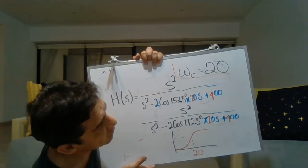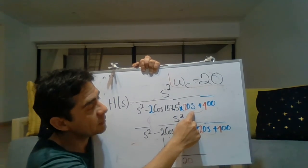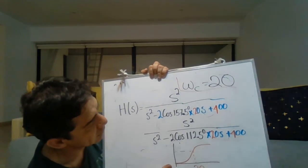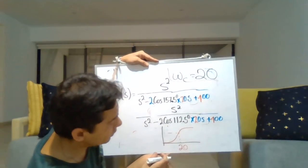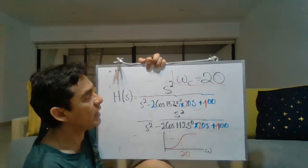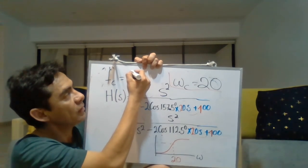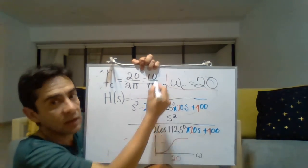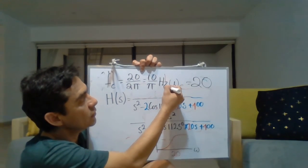How do we know the cutoff frequency is 20? Because the first-order term is multiplied by the cutoff frequency and the constant term is multiplied by the square of the cutoff frequency. The last question: convert the cutoff frequency from radians to hertz. The cutoff frequency in hertz equals 20 over 2pi, which is the same as 10 over pi.